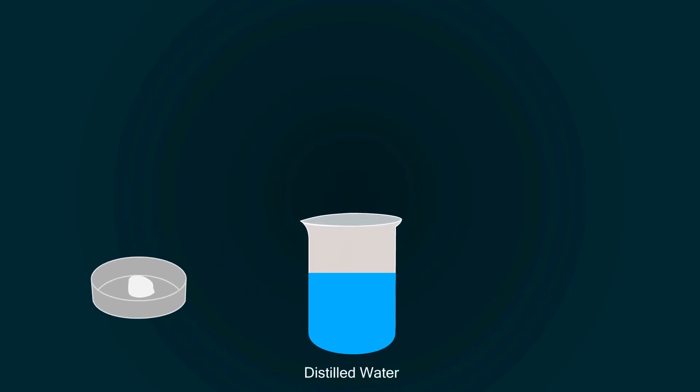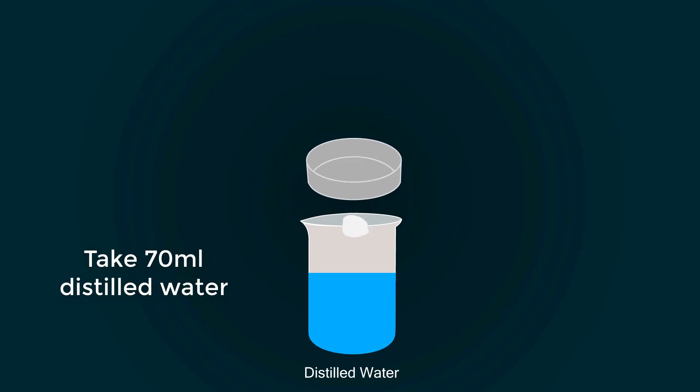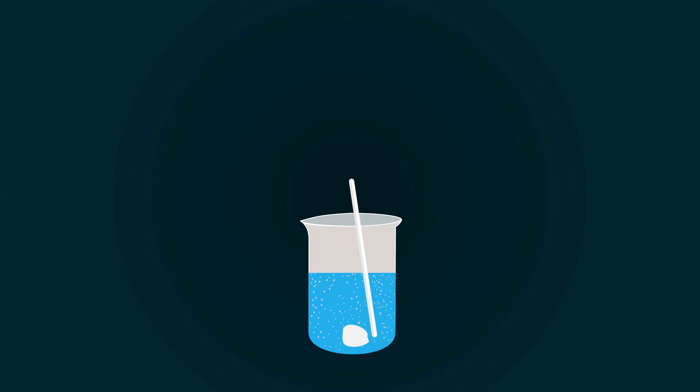Now add the potassium hydroxide into the distilled water. You can take distilled water up to 70 milliliters for mixing. You have to make a homogeneous mixture.